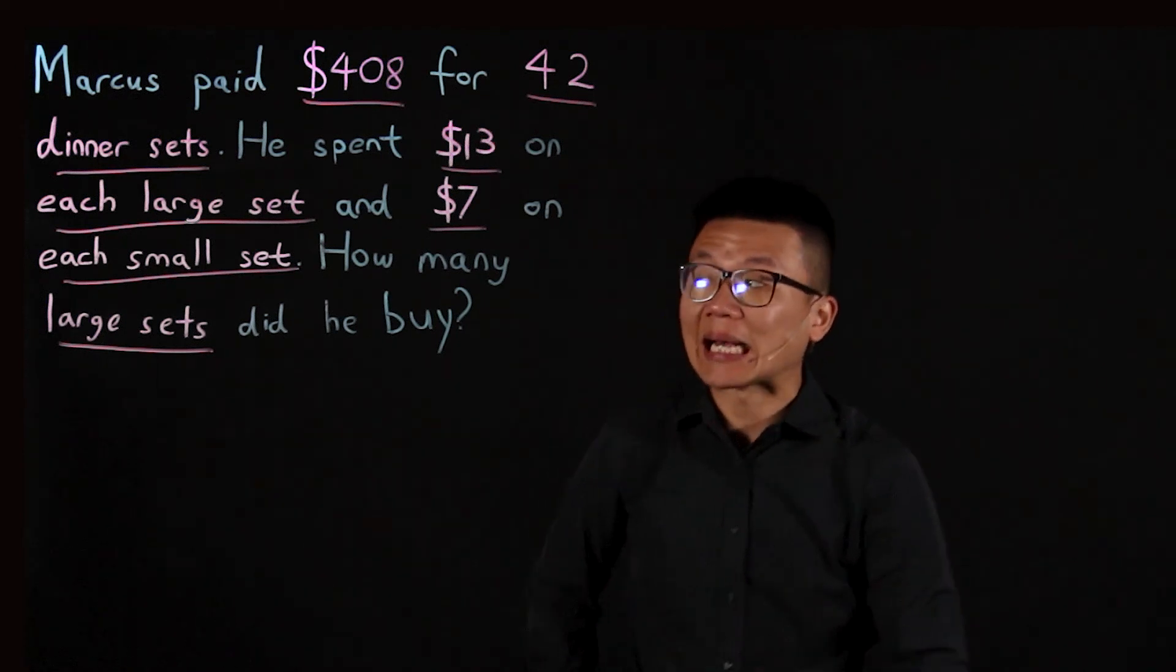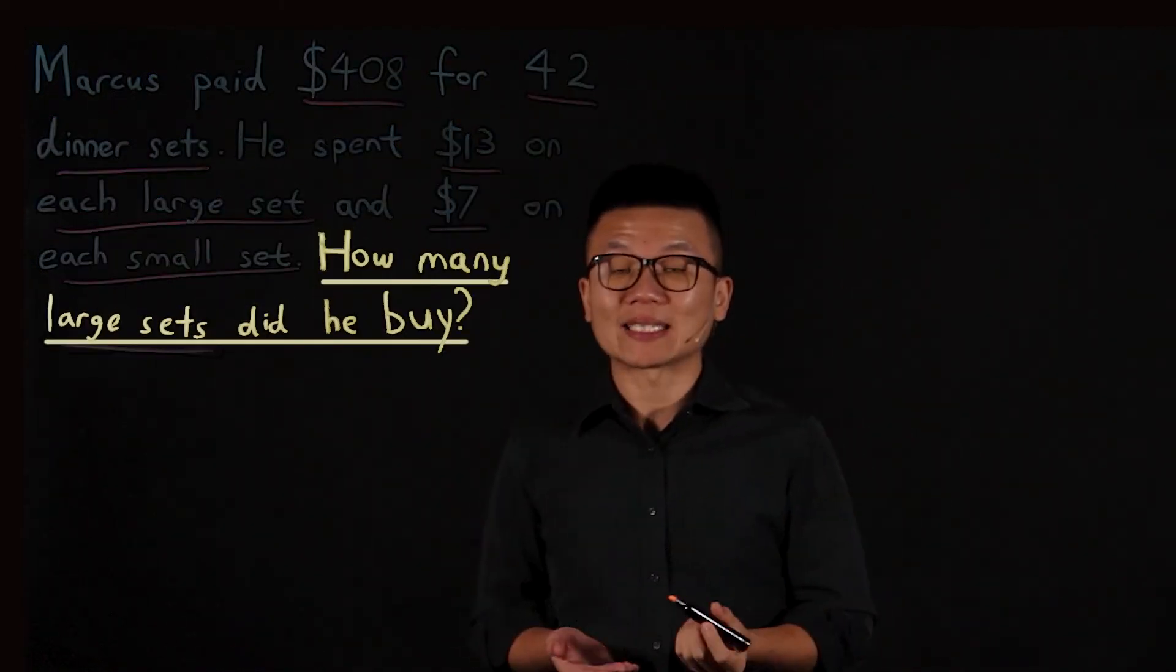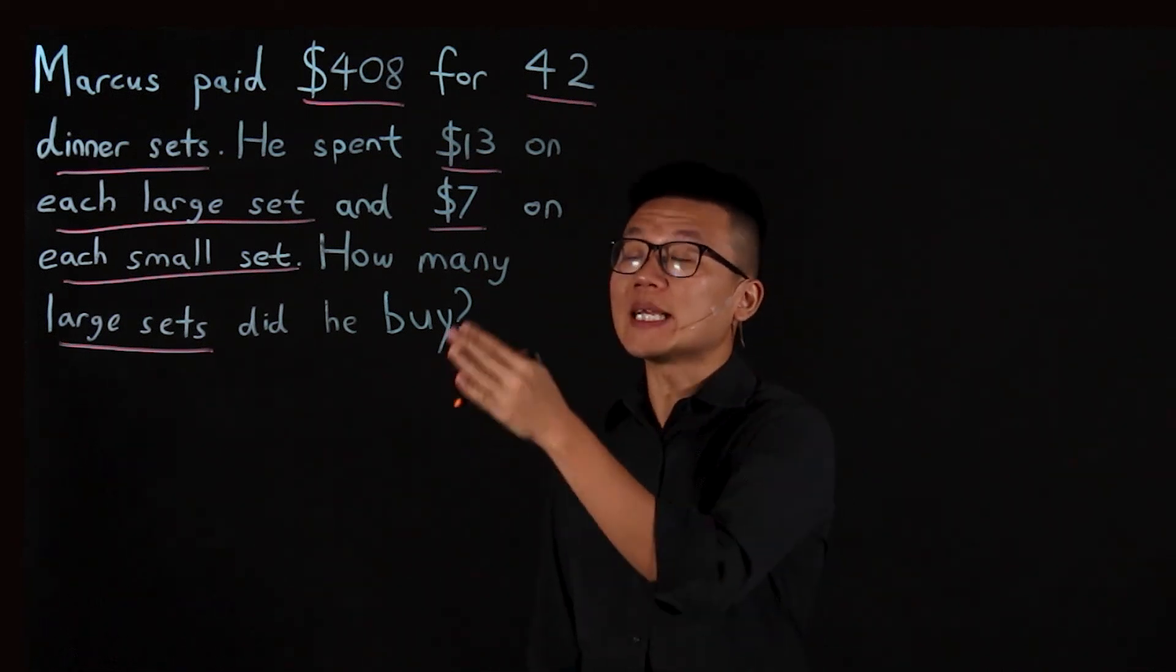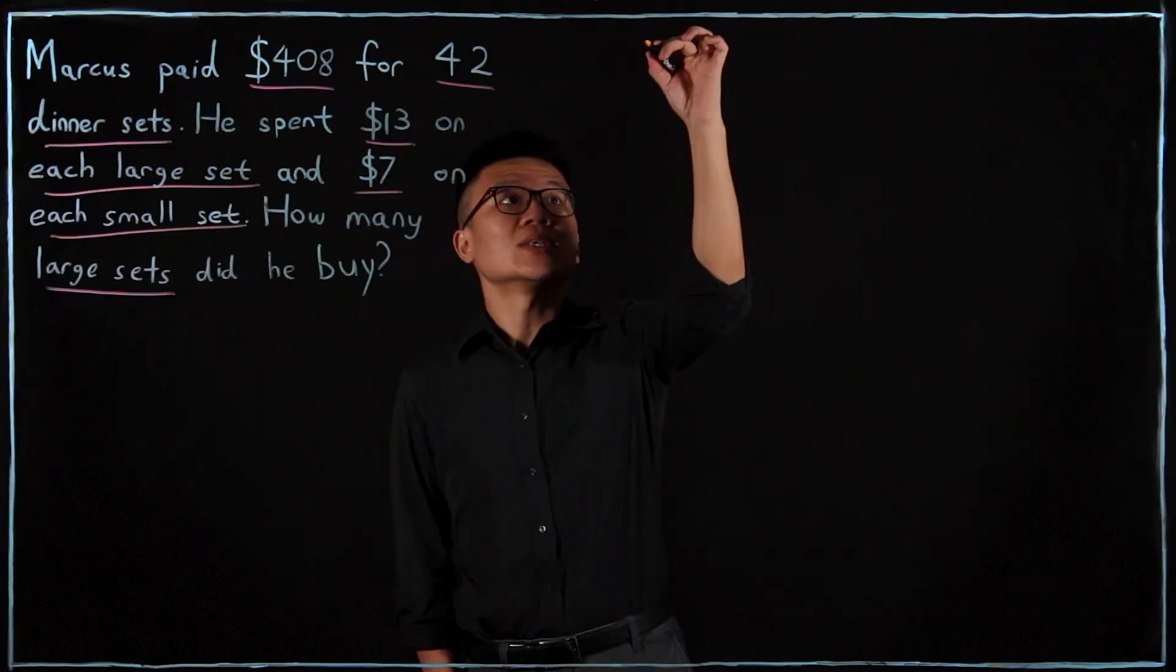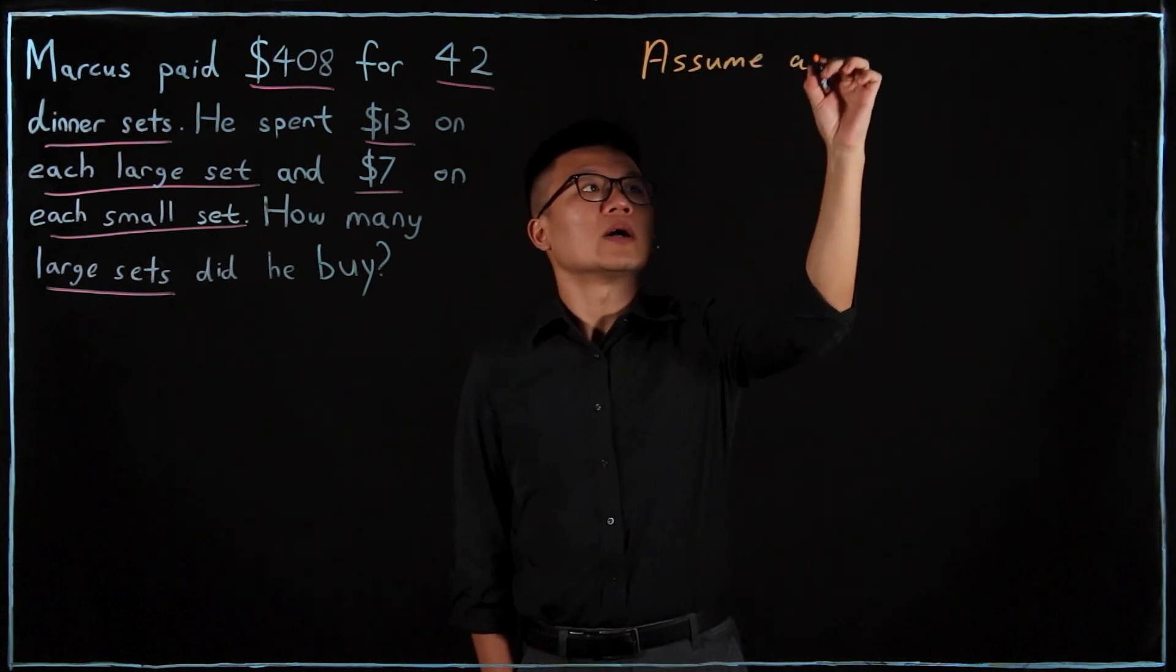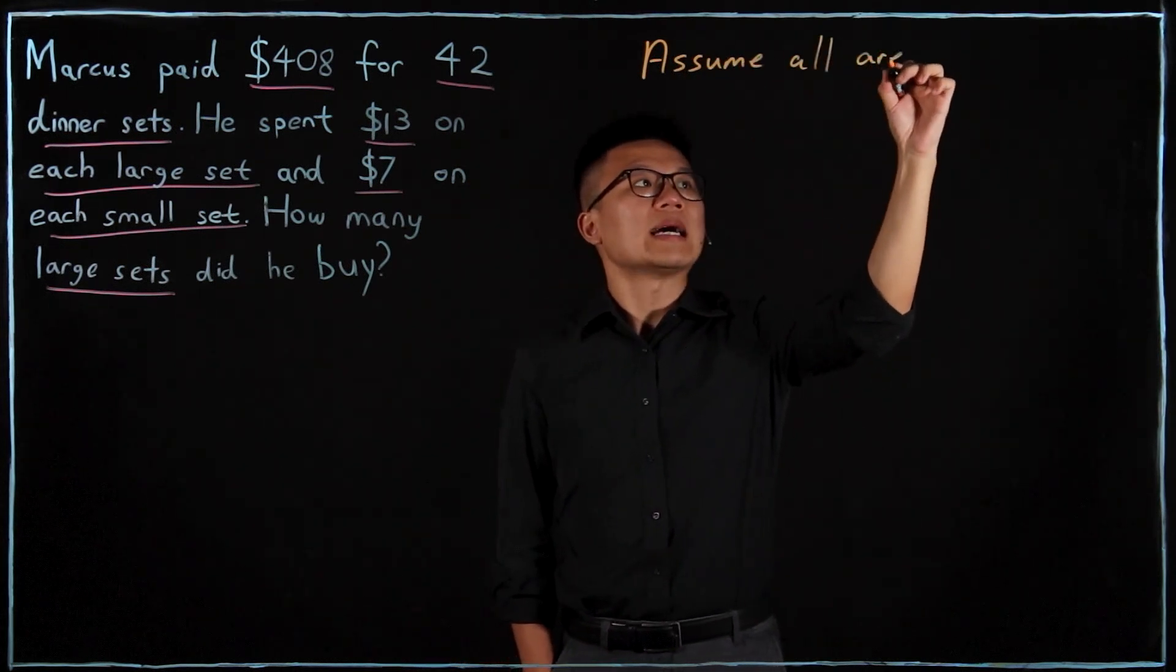Right now the question is asking for large sets, so we have to assume the opposite. The opposite in this case will be small sets. So assume all are small sets.